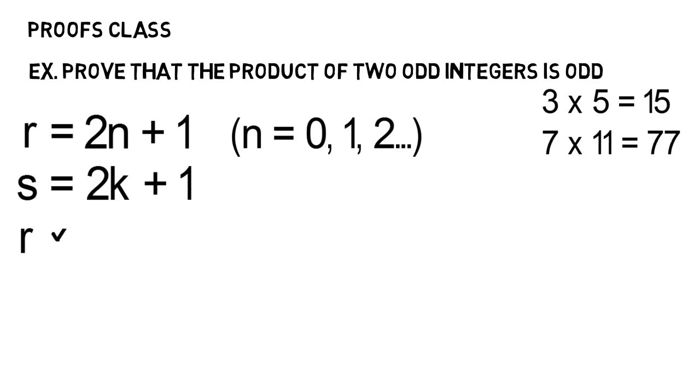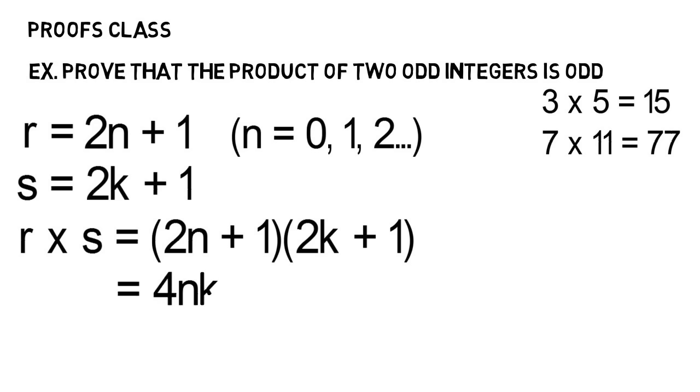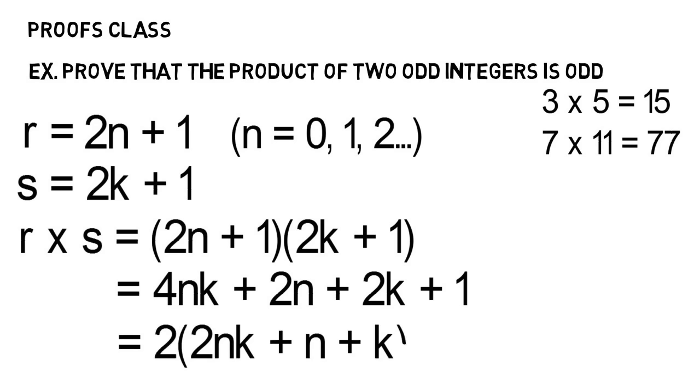Then if we multiply the two odd numbers, r times s, we can write it like this. Then if we FOIL or multiply this out, we get this. But as you can see, we can factor out a 2 from those first three terms, which yields this. And we're actually pretty much done.